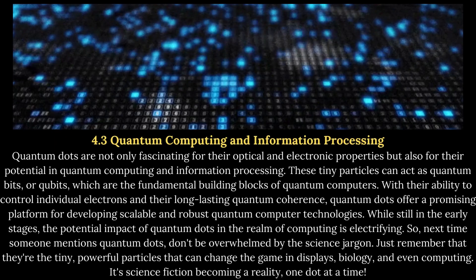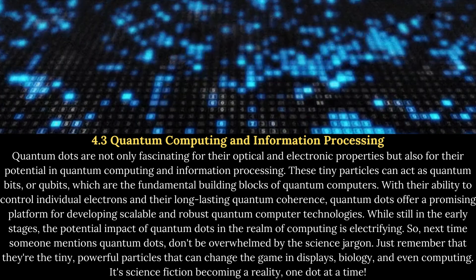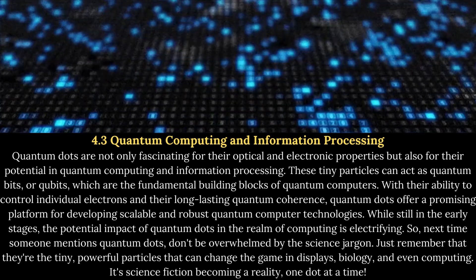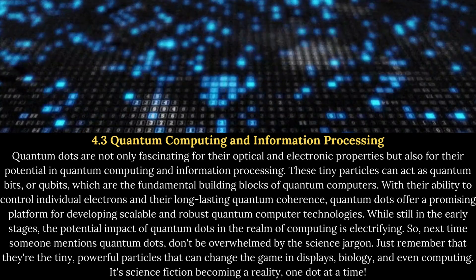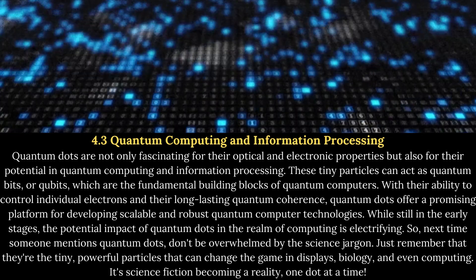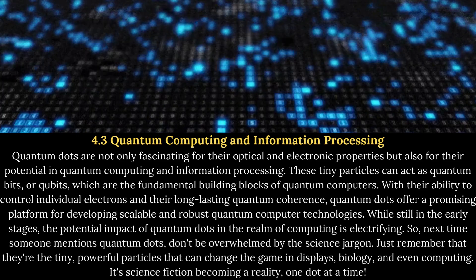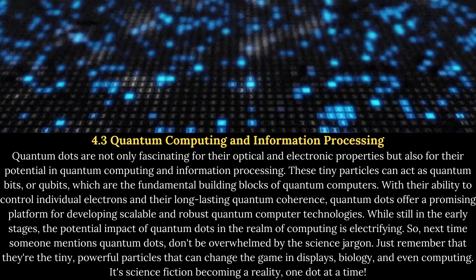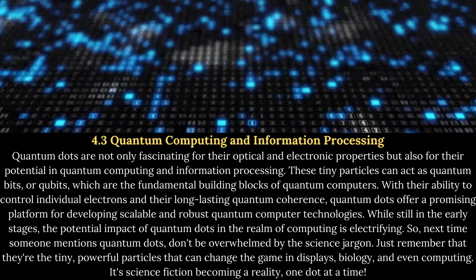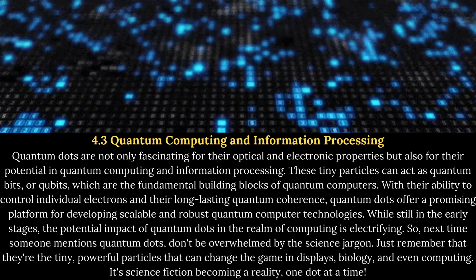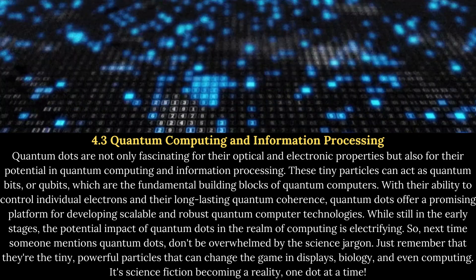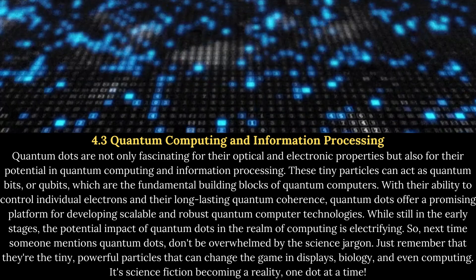4.3 Quantum Computing and Information Processing. Quantum dots are not only fascinating for their optical and electronic properties but also for their potential in quantum computing and information processing. These tiny particles can act as quantum bits, or qubits, which are the fundamental building blocks of quantum computers. With their ability to control individual electrons and their long-lasting quantum coherence, quantum dots offer a promising platform for developing scalable and robust quantum computer technologies. While still in the early stages, the potential impact of quantum dots in computing is electrifying — these tiny, powerful particles can change the game in displays, biology, and even computing.